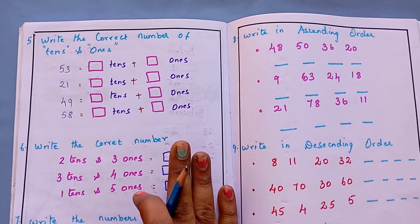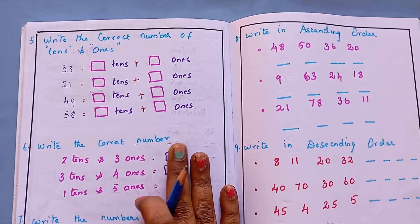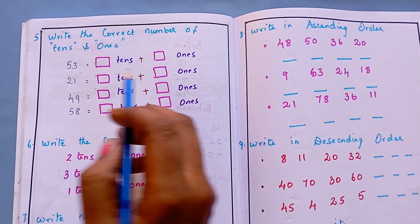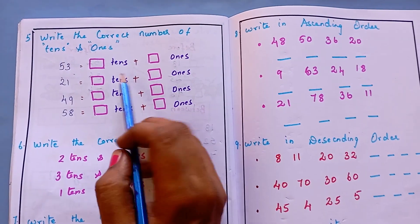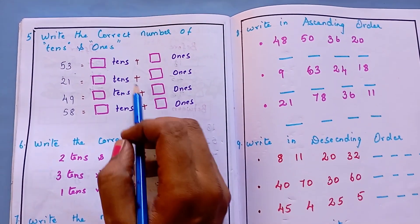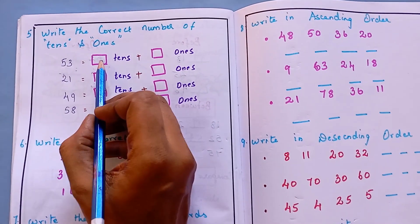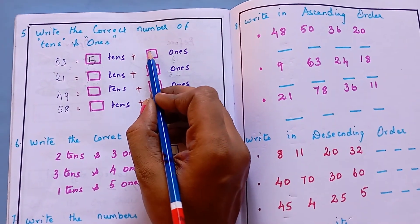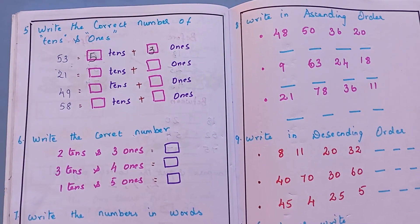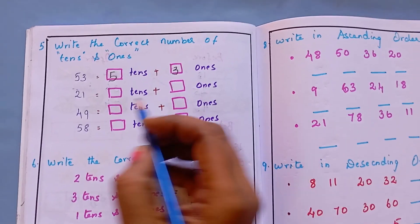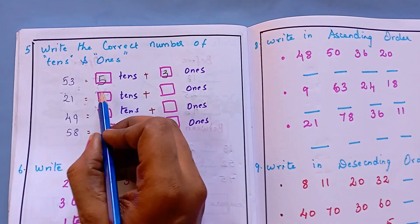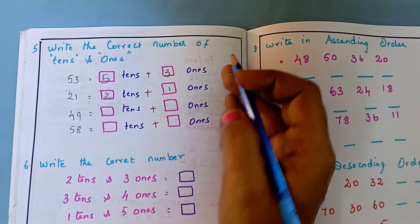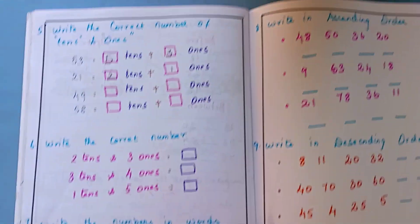The fifth question is: write the correct number of tens and ones. The first number given is 53 — the kid has to write how many tens and how many ones are here. So 53 means 5 tens and 3 ones. Next one is 21 — that is 2 tens and 1 one. Like this, the kid has to write and complete this.